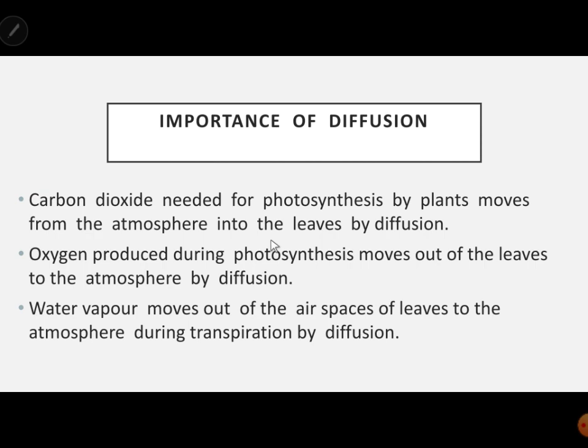Plants also benefit from diffusion in other ways. Oxygen produced during photosynthesis moves out of the leaves to the atmosphere by diffusion. Water vapor moves out of the air spaces of the leaves to the atmosphere during transpiration, also by diffusion.